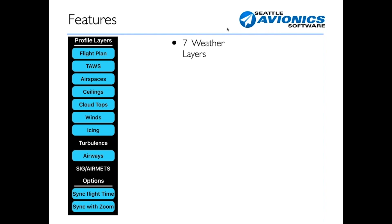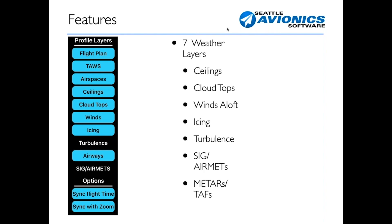There are seven different layers specifically to do with weather. First, ceilings — we'll show you if the cloud layer above you is scattered, broken, or overcast. We also show cloud tops; from the internet those are cumulus cloud tops, while from ADS-B they're all cloud tops, even if they're not cumulus. You also see winds aloft, and there's a lot to cover there because it's particularly useful — especially knowing whether you can get somewhere faster by flying at a different altitude.